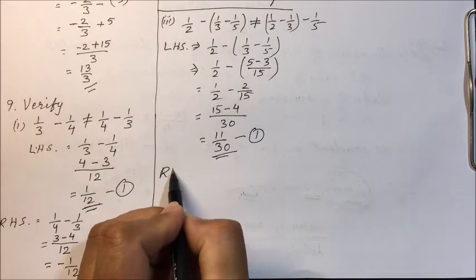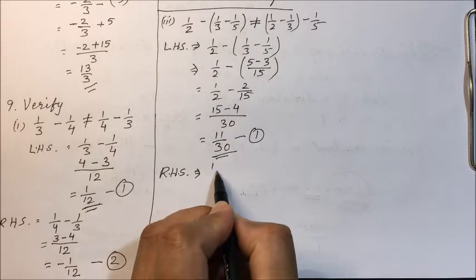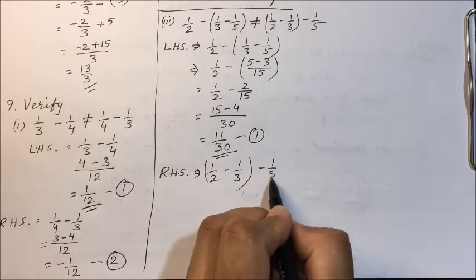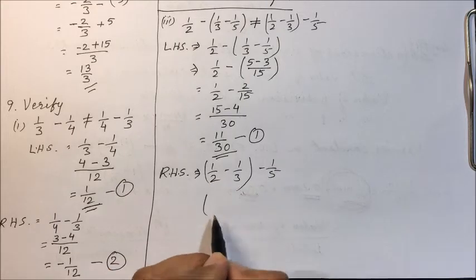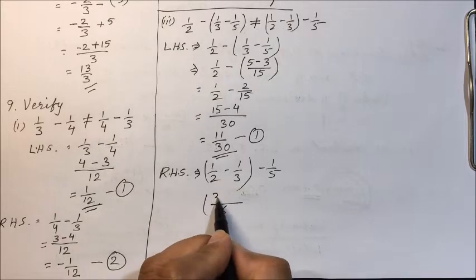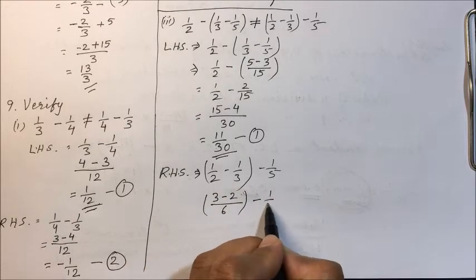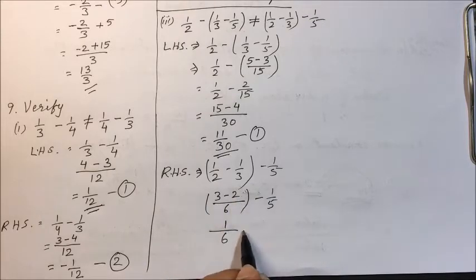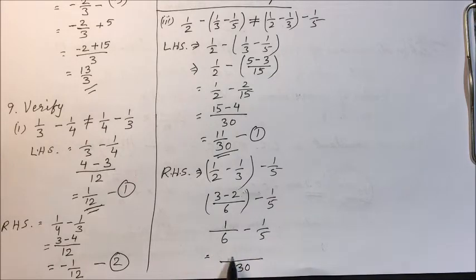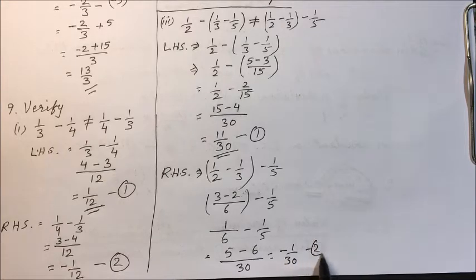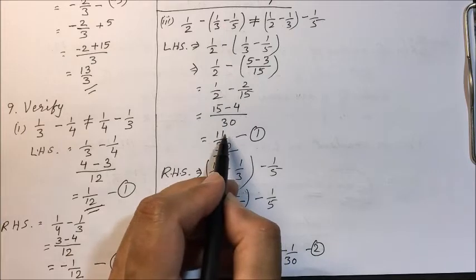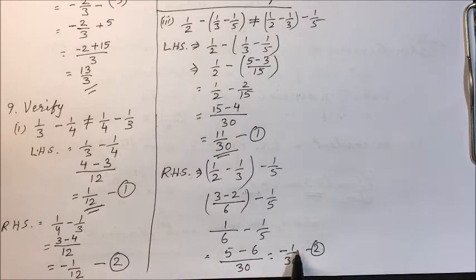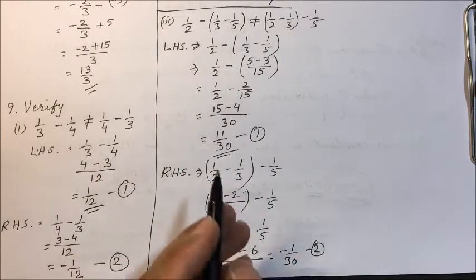Now taking the right hand side: (1/2 minus 1/3) minus 1/5. Solving the bracket first, LCM is 6, giving 3 minus 2, which is 1 upon 6, minus 1 upon 5. Taking LCM as 30, we get 5 minus 6, which is minus 1 upon 30. This is our second result. LHS is 11 upon 30 and RHS is minus 1 upon 30 — they are different.